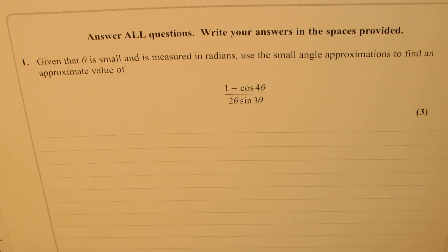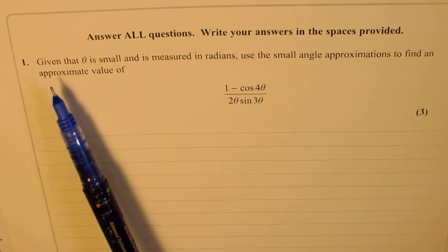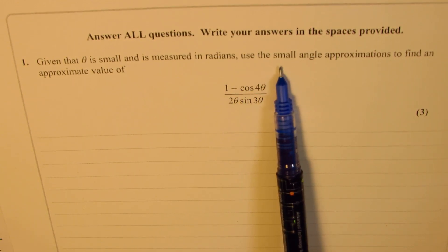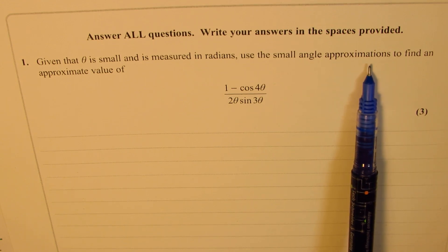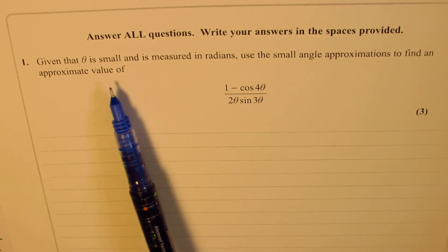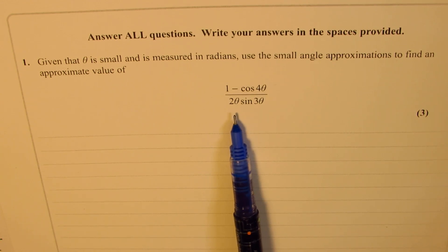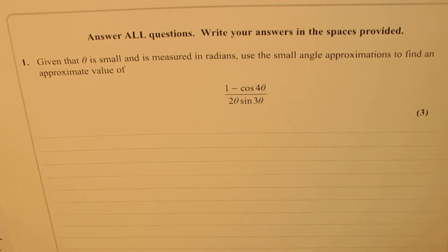Here is the very first question. The question is, given that theta is small and is measured in radians, use the small angle approximation to find an approximate value of 1 minus cos 4 theta over 2 theta sine 3 theta, 3 marks.